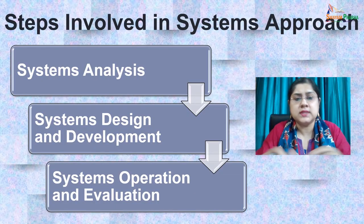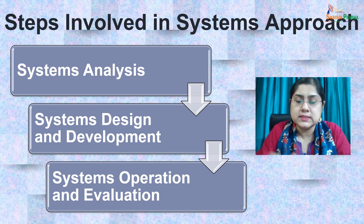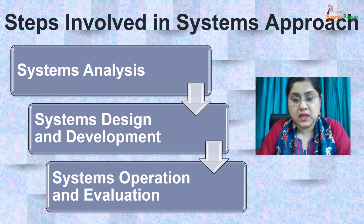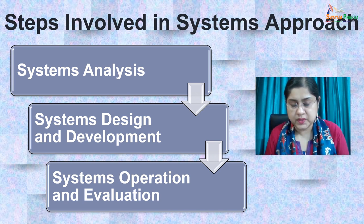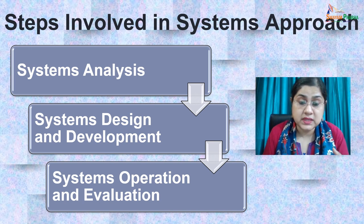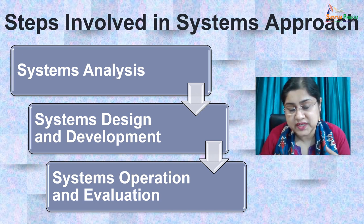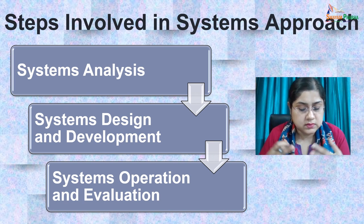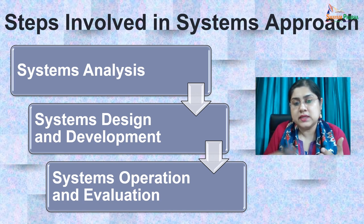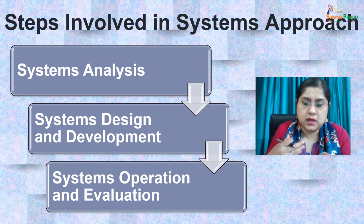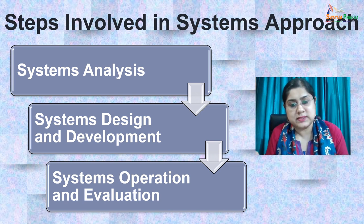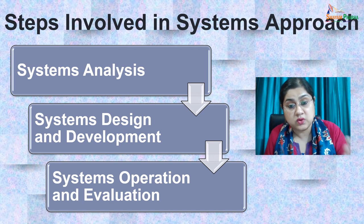Let us see what the steps are which are involved in the systems approach. There are three major steps involved in the systems approach. The first step is the system analysis. The second step is the system design and development, and the third step is the systems operation and evaluation. All these three steps are very important. They go one by one and we will get into the details of these three steps.